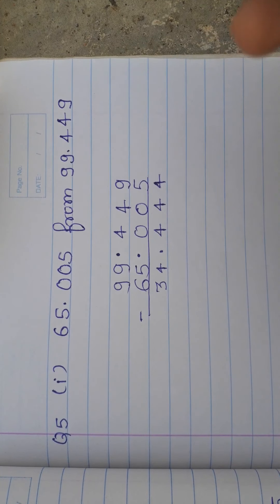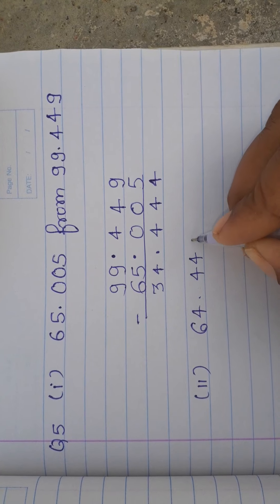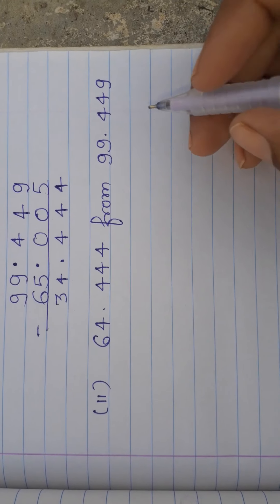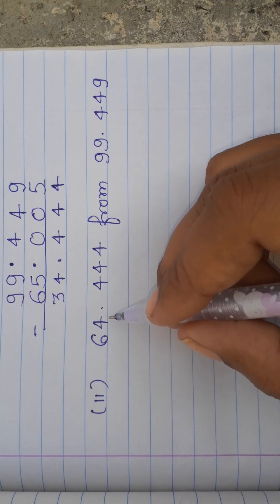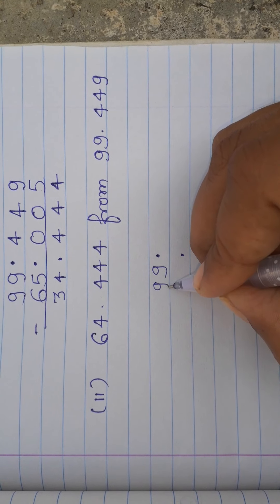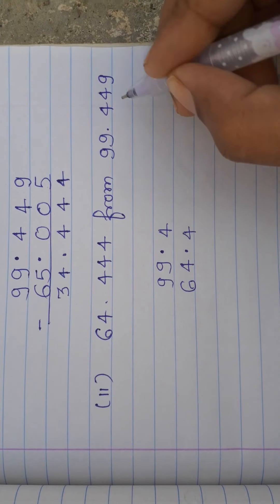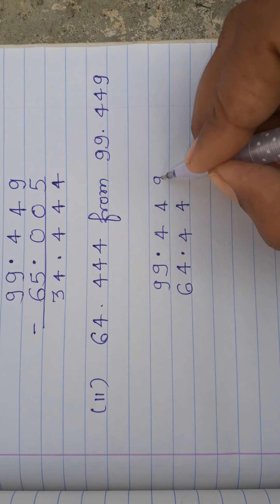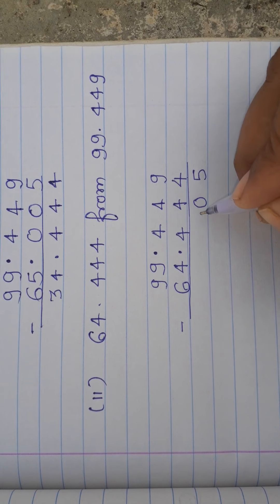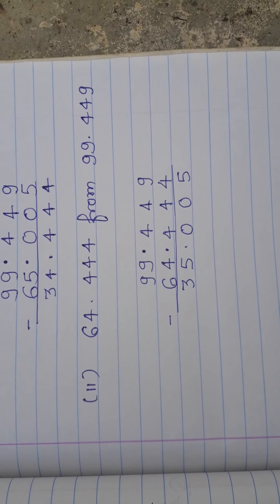Subtracting normally: 9 minus 5 is 4; 4 minus 0 is 4; 4 minus 0 is 4; 9 minus 5 is 4; and 9 minus 6 is 3. So the answer for the first question of Q5 is 34.444. Similarly, in question number 2 of Q5 we subtract 64.444 from 99.449. Arranging in columns: tenths 4 and 4; hundredths 4 and 4; thousandths 9 and 4. Subtracting: 9 minus 4 is 5; 4 minus 4 is 0; 4 minus 4 is 0; 9 minus 4 is 5; 9 minus 6 is 3. Answer: 35.005.